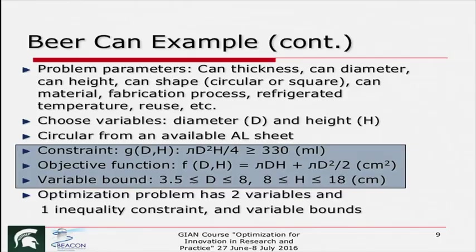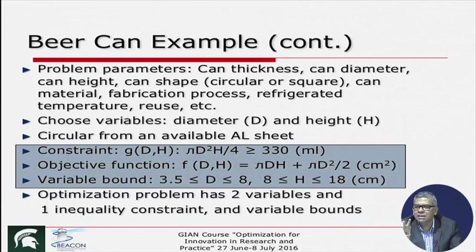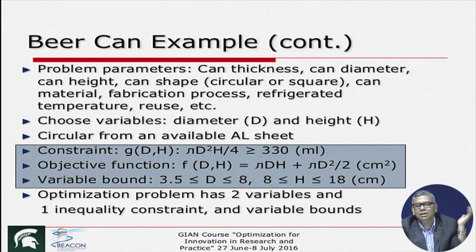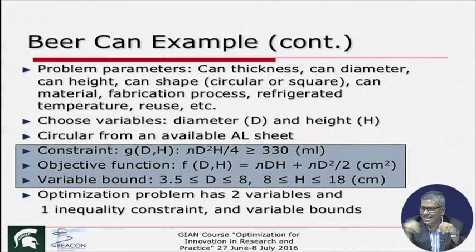If your objective function and constraints are not functions of a particular variable — for example, if I use what color I am going to put on the can, and my cost does not depend on it — that variable does not appear in either my constraints or my objective function. You can put anything there, you have a free ride. But if you have chosen something as a variable, it should reflect in your objective function and constraints. If not, you can come back and delete it as a variable.